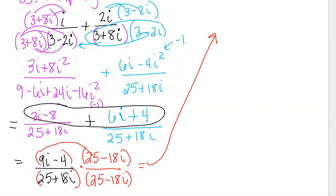I'm going to go way over here and distribute all of this out. 9i times 25 is 225i. 9i times negative 18i is negative 162i squared. Negative 4 times 25 is negative 100, and negative 4 times negative 18i is positive 72i. That was just the numerator.